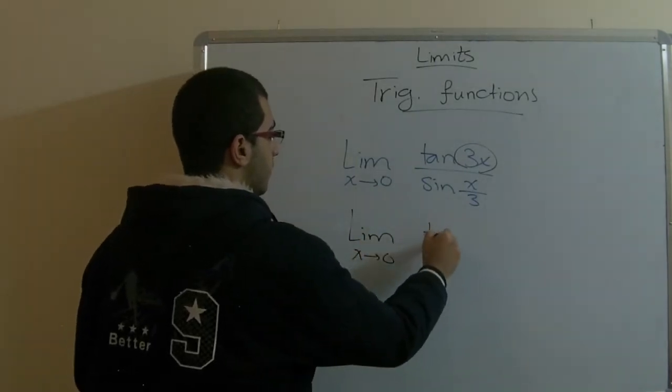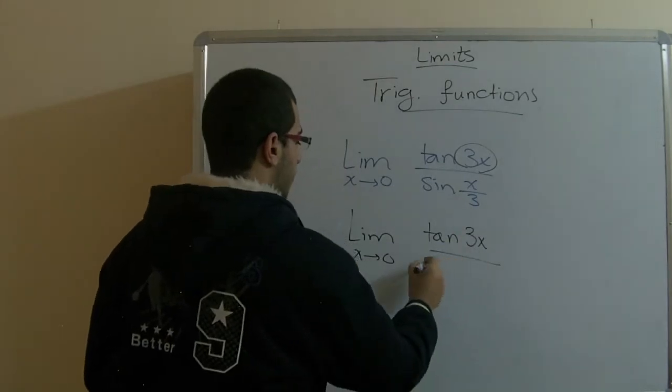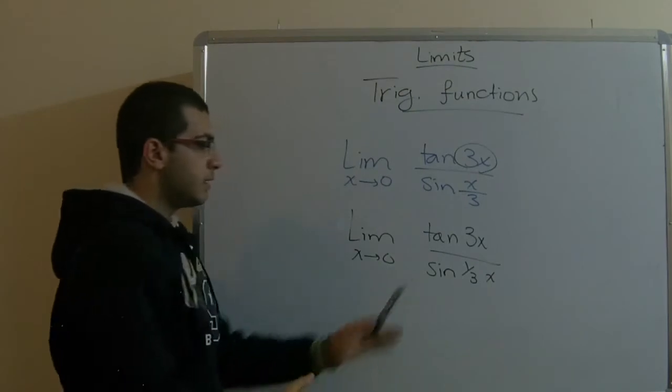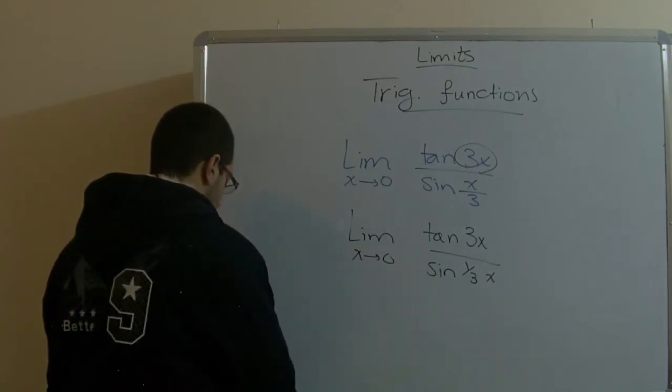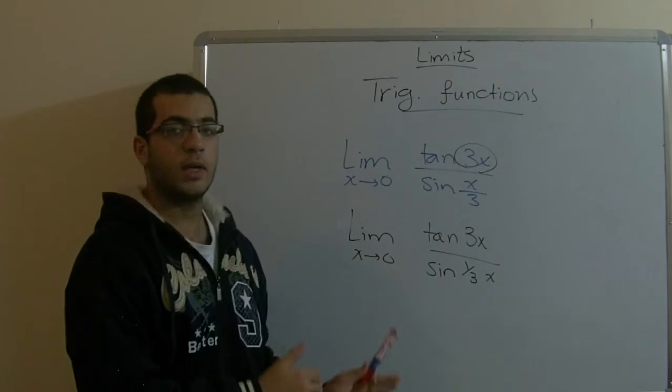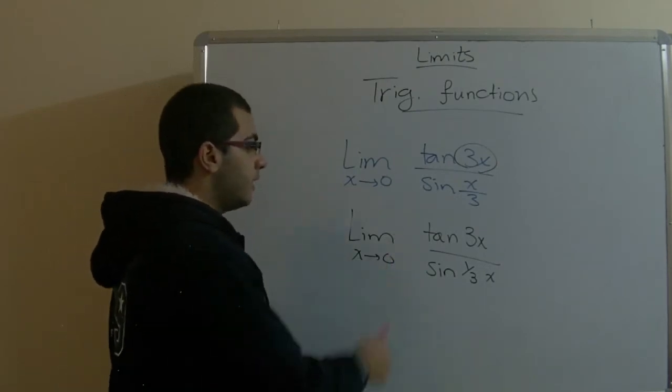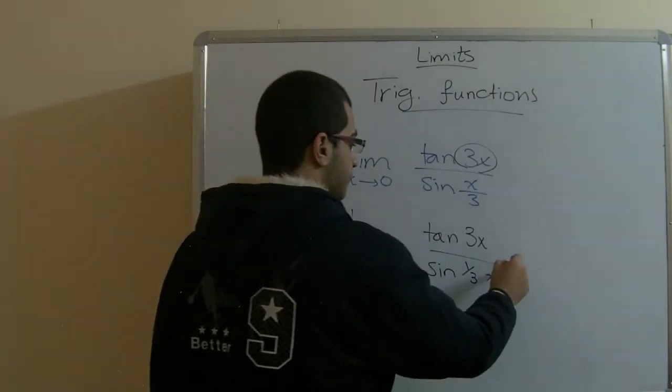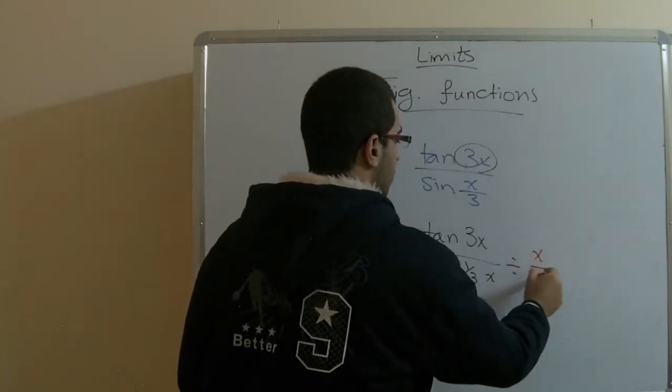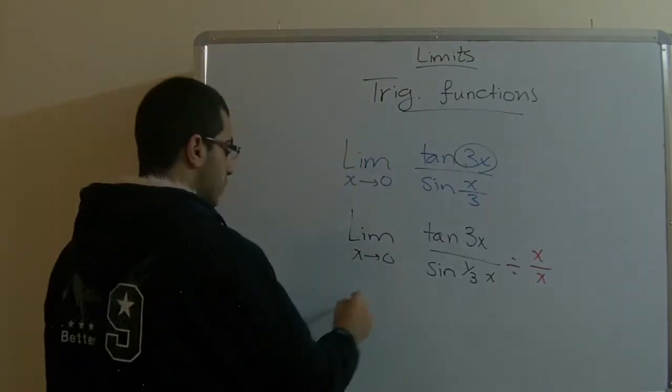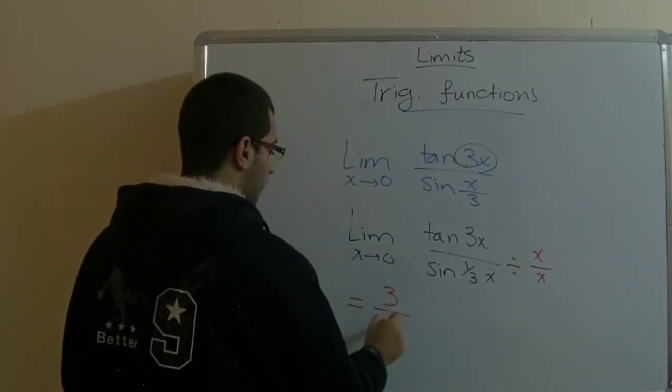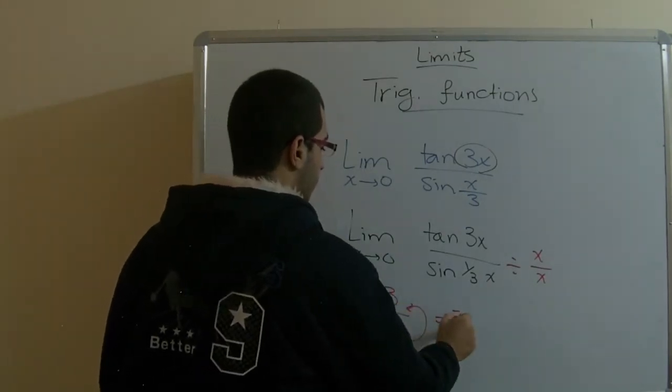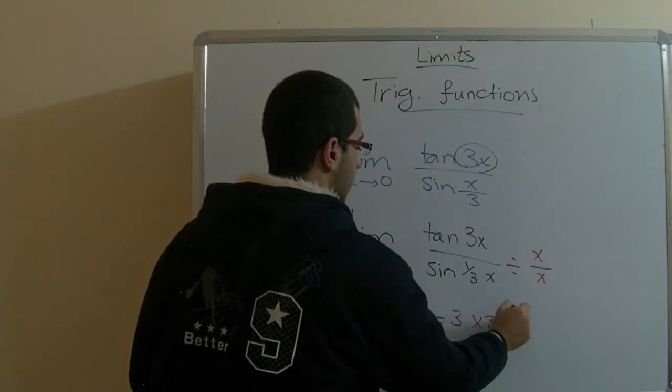Then 3x over sine 3x. So it's the same way here. And we can solve it easily as any other trigonometric function. We divide the numerator and the denominator by x to get 3 over 1 over 3 and flip it over to get 3 by 3 to yield at last 9.